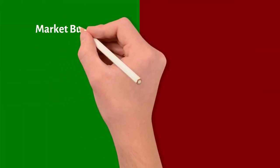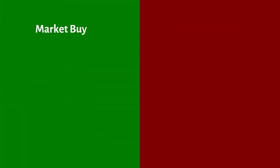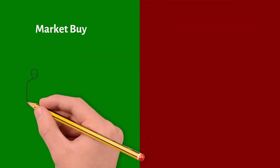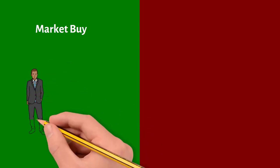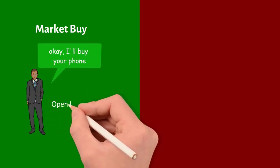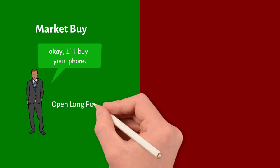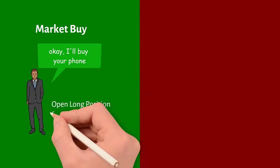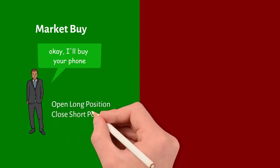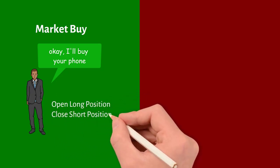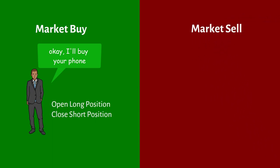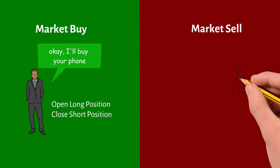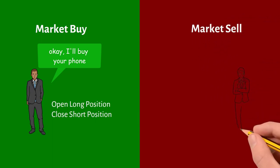Now, approaching the topic of this video, there are two types of trades. The first is market buys: they occur when a trader agrees with the price in a sell order and buys an exchange asset, opening a long position or closing a short one.